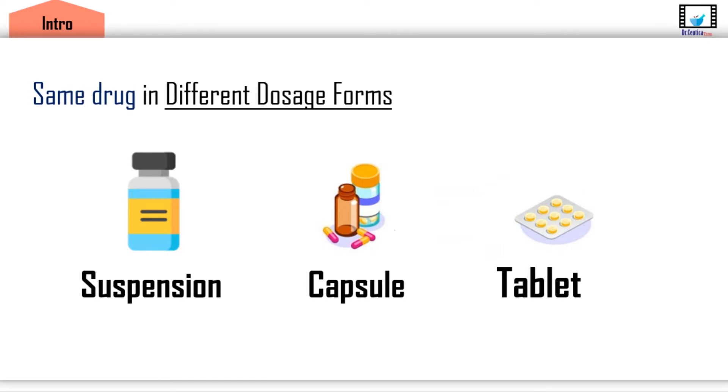My second question is similar to the first, but for another scenario — having the same drug in three different dosage forms: a capsule, a tablet, and a suspension. What do you think about the amount of drug in the circulation after one minute of taking each of these dosage forms?